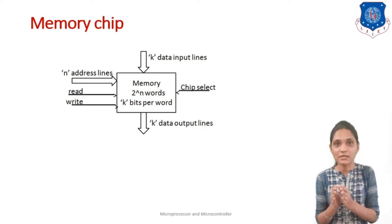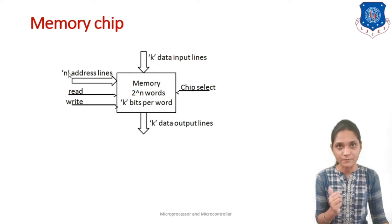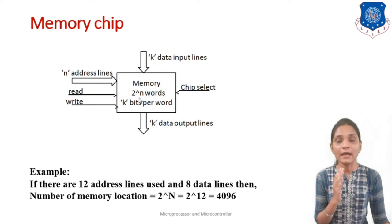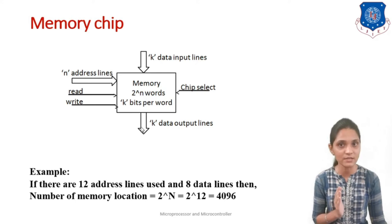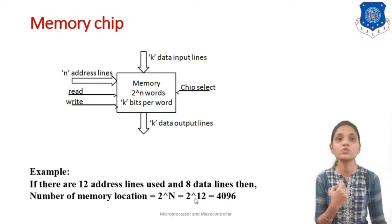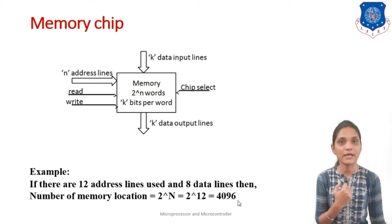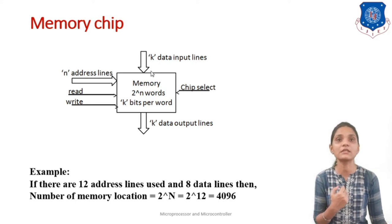The data lines depend upon how many bits you can process at a time. For the 8085 microprocessor, it can process 8-bit data, so we connect memory with 8-bit data lines. For address lines, if there are n address lines, we can address up to 2 raised to n locations, and each location can have K bits. For example, a memory chip with 12 address lines and 8 data lines has 2 raised to 12, which equals 4096 locations, and each location contains 8 bits.